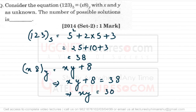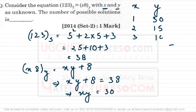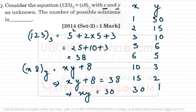We now have two unknowns x and y with xy = 30. Listing factor pairs: if x = 1, y = 30; if x = 2, y = 15; x = 3, y = 10; x = 5, y = 6; x = 6, y = 5; x = 10, y = 3. These are the possible (x, y) pairs.